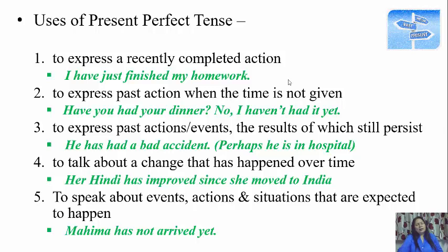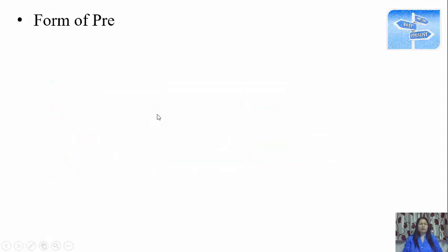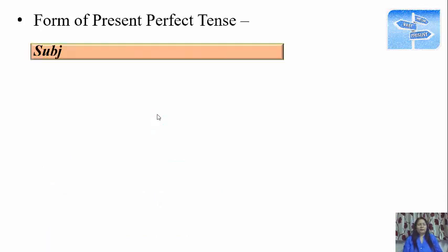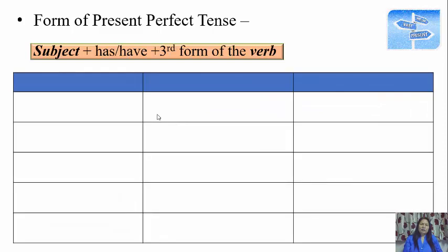Now let's study the form — the verb form we use. We use 'have' plus the third form of the verb, or 'has' plus the third form of the verb. The structure is: Subject + has/have + third form of the verb. The following examples make it very clear how to change sentences from affirmative to negative and interrogative.